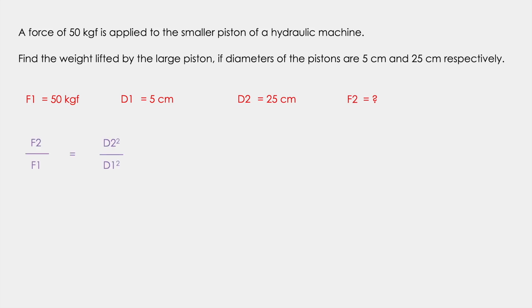Now we know that F2 upon F1 is equal to D2 square upon D1 square. And therefore, by making F2 as a subject and replacing the values, we get F2 as 1250 kgf.